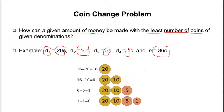From the greedy design technique perspective, as discussed earlier using the analogy of a ringing phone — you go straight for it without thinking about obstacles. Here, the goal is to find the least number of coins by always choosing the highest coin value, the maximum denomination available.